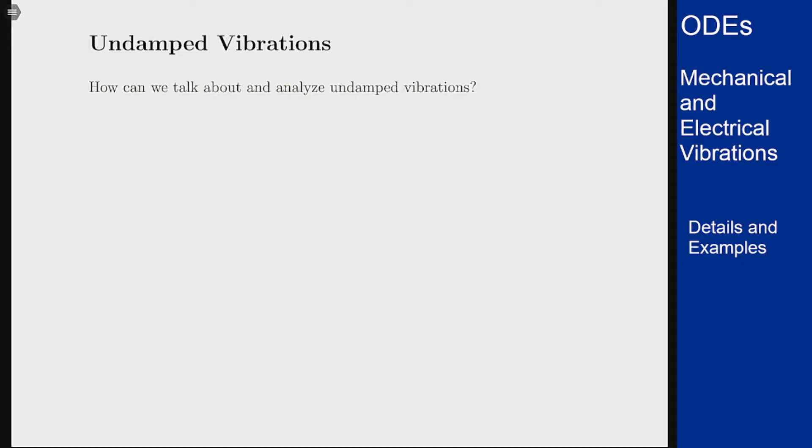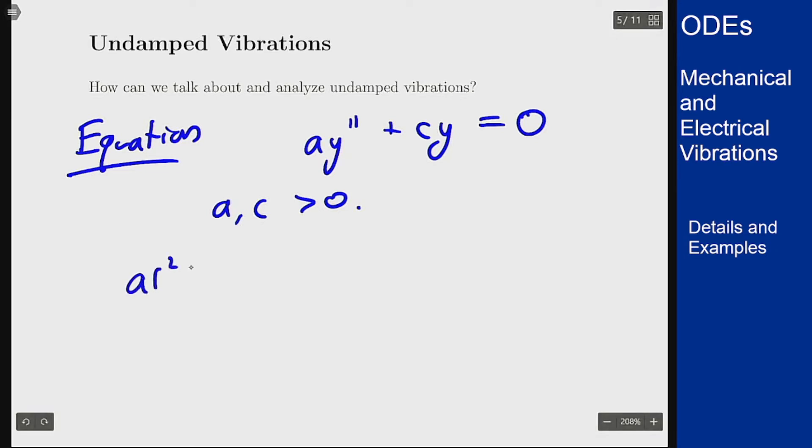So in this case our equation reduces to something of the form a y double prime plus c y equals zero, because the b term is gone, it's zero. And a and c are both positive numbers. What does that mean for our solution here? We can find this just by solving this out. The characteristic equation here is a r squared plus c equals zero, or r is plus or minus square root of c over a. The negative sign because it'll be minus c and move it over.